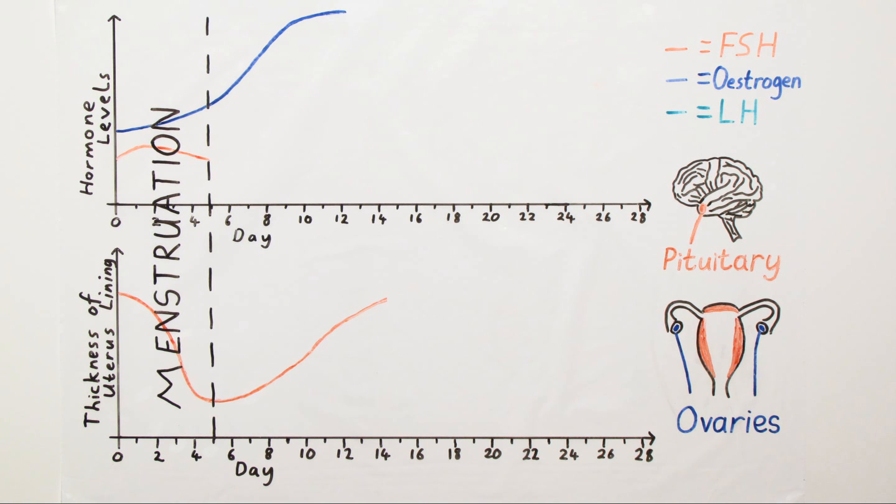Secondly, the increase in oestrogen causes the pituitary gland to stop making as much FSH and the levels of FSH fall.